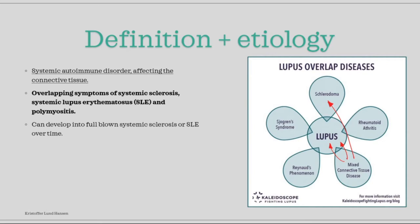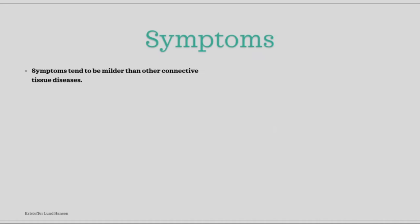MCTD can give symptoms from different connective tissue diseases, though the symptoms tend to be milder. There are many possible presentations, but the key ones to know are: arthritis — the inflammation of the joints — which can affect just one or many joints.